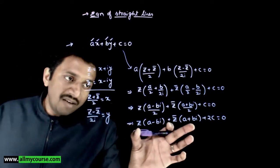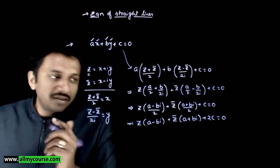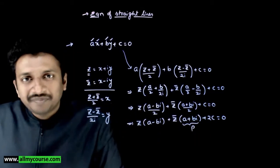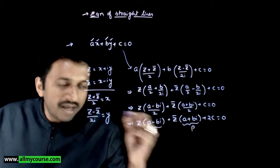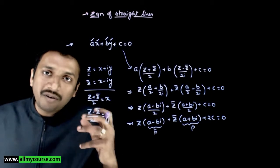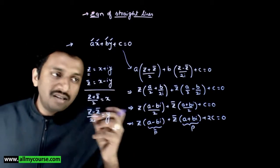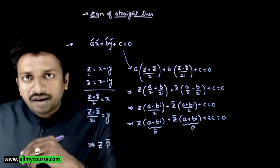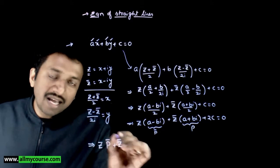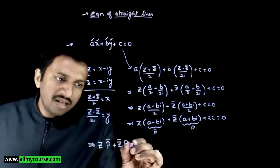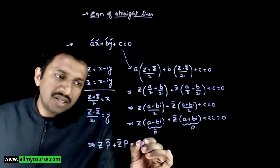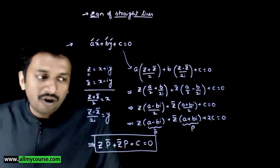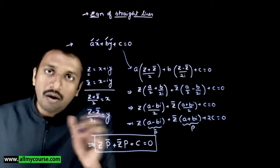If we observe this carefully, if we take the complex number a plus bi as p, then a minus bi is simply p̄. So the general form of the equation of a straight line in the Argand plane looks like z times p̄ plus z̄ times p plus some real constant equals zero.